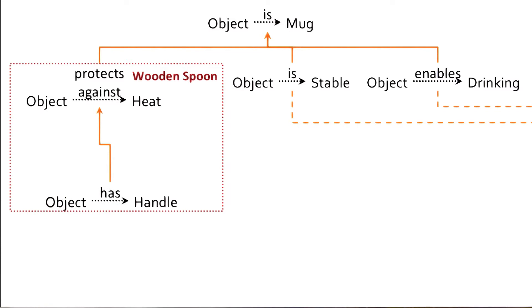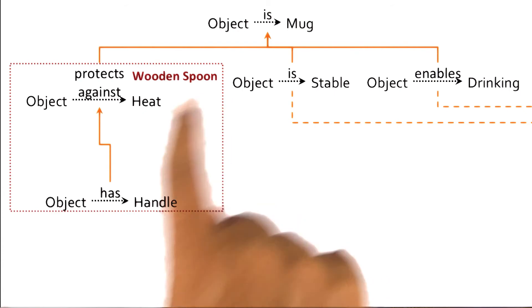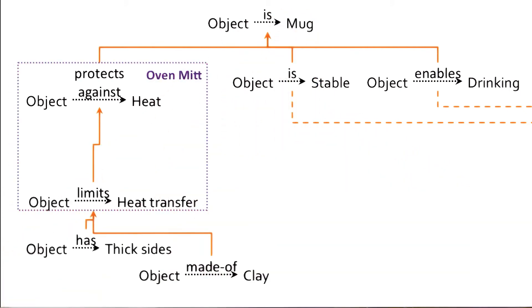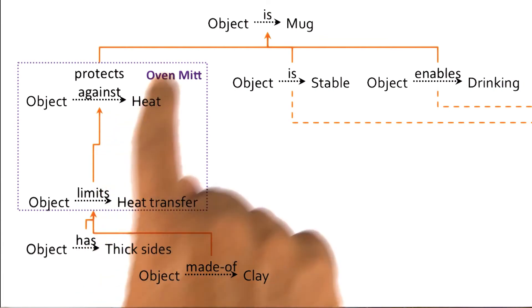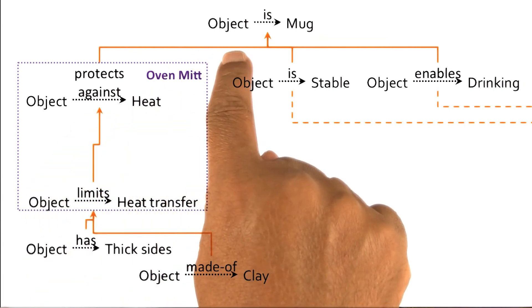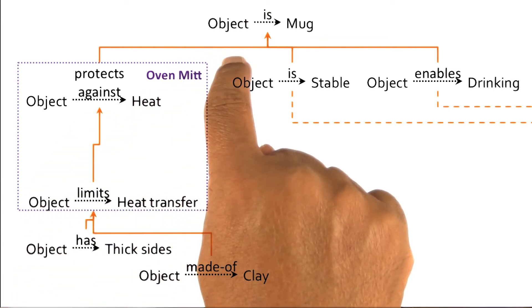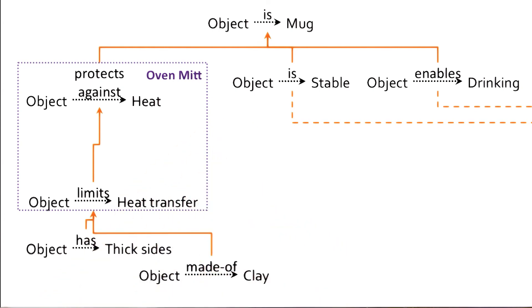The second point to note here is that depending on the background knowledge available, the AI agent would opportunistically build the right kind of causal proof. So if the AI agent knows about a wooden spoon, it will build this proof. If, on the other hand, the AI agent knew not about the wooden spoon, but about the oven mitt, then it would use this particular proof. Which proof the AI agent will build will depend upon the precise background knowledge available to it.